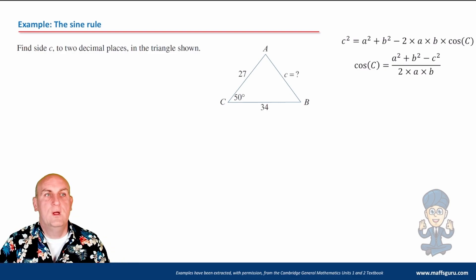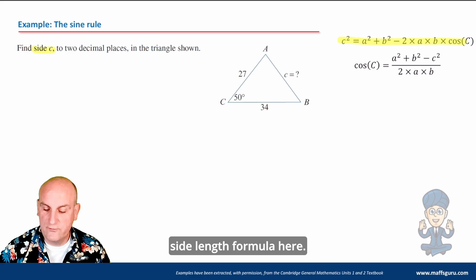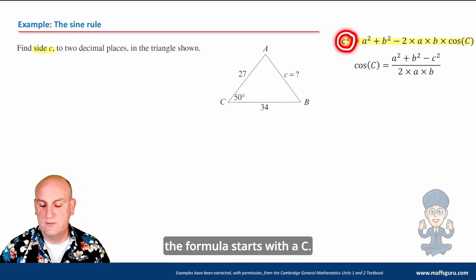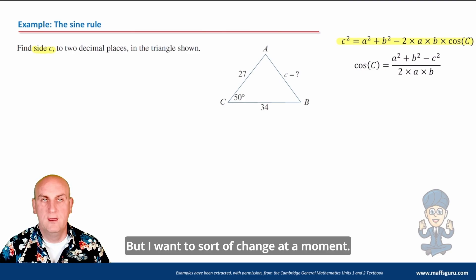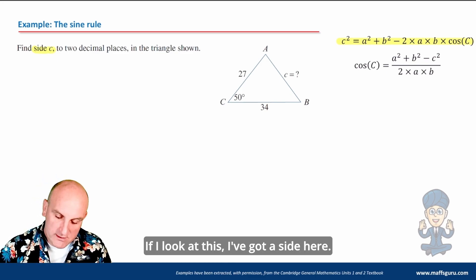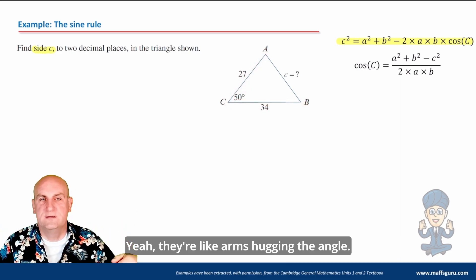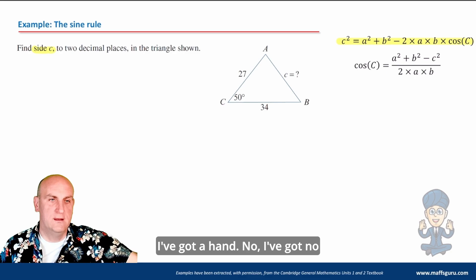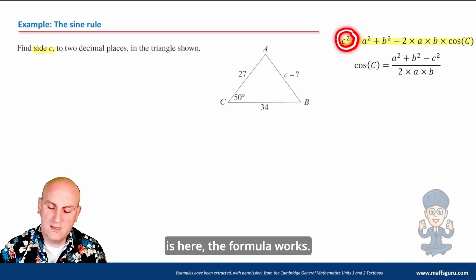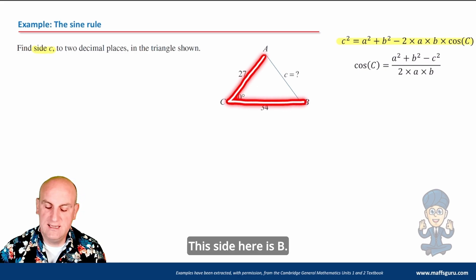It probably makes more sense to use examples. Find side C — because we're finding a side length, we use the side length formula. I like to think of this as two sides and a huggable angle — like a hug. If I look at this triangle, I've got a side here and a side here, and they are hugging that angle — like arms hugging it.